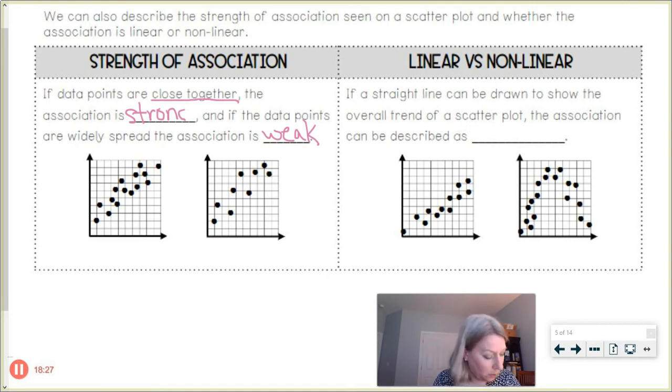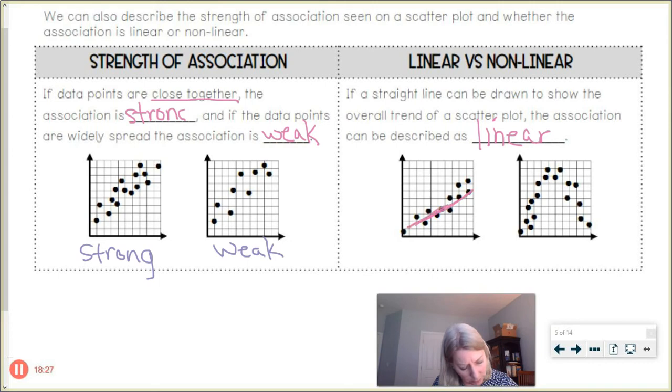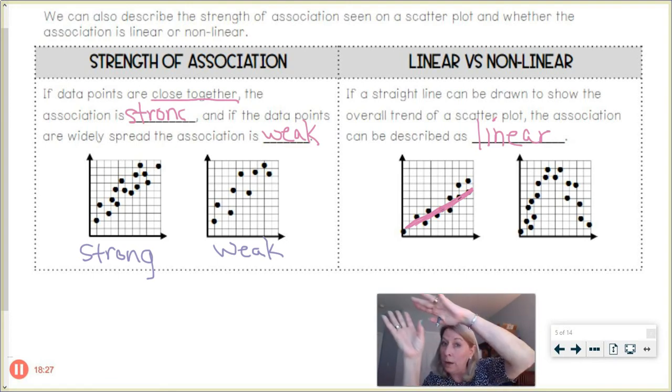All right, linear versus nonlinear. Oh, so okay, in our example here, let me just, this would be strong because the data points are kind of clustered together. And this one that's scattered would be a weak association. All right, over here, if a straight line can be drawn to show the overall trend of a scatter plot, the association can be described as linear, like kind of straight line. So notice the trend here in these dots here is kind of like, if I were to draw a line, it would kind of be in the middle of all those dots. Those dots are kind of following a line, a little scattered, but following a line. So that's linear.